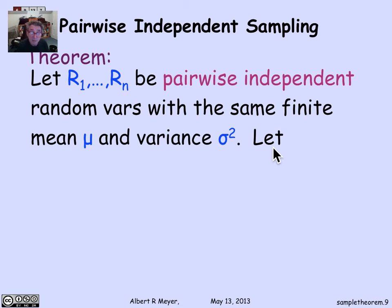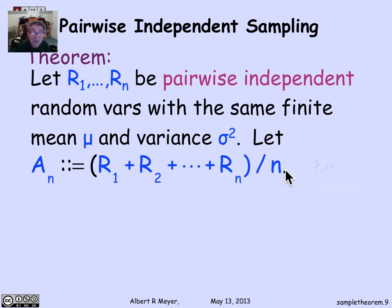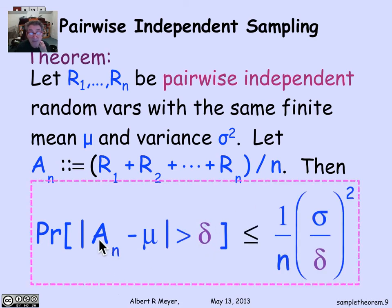We can summarize what we really proved when we thought we were proving the law of large numbers. We actually proved a precise quantitative theorem that says that if r_1 through r_n are pairwise independent random variables with the same finite mean mu and variance sigma squared, and we let A_n be the average of those n variables, then the probability that the average differs from the mean by more than delta is less than or equal to this definite number that we derived, 1 over n times sigma over delta squared. When we thought we were just proving the law of large numbers, we actually got this much tighter quantitative theorem.